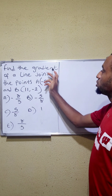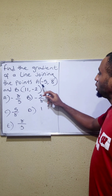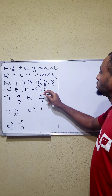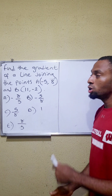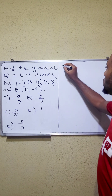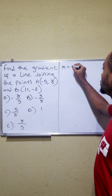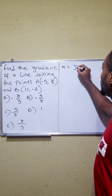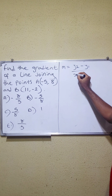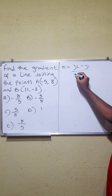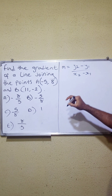Here, we are asked to find the gradient of a line joining the points A and B, which is (-5, 8) and (11, -2). To find this, we need to use the formula to find the gradient or the slope, which is m = (y2 - y1) / (x2 - x1).